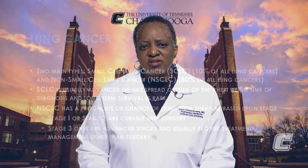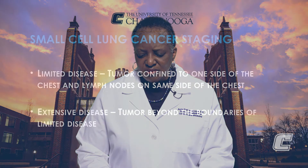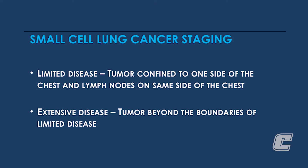Small cell lung cancer staging involves just two stages. There is limited disease, which is tumor confined within the chest and lymph nodes on the same side of the chest, and there is extensive disease, which is tumor that has spread beyond the boundaries of the limited disease.